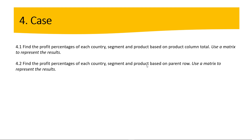Now let's get into the case. We have two questions. Question one: find the profit percentages of each country, segment, and product based on the product column total, and use a matrix to represent the results. Question two: find the profit percentages of each country, segment, and product based on parent row, and use a matrix to represent the results. Let's go to Power BI Desktop.